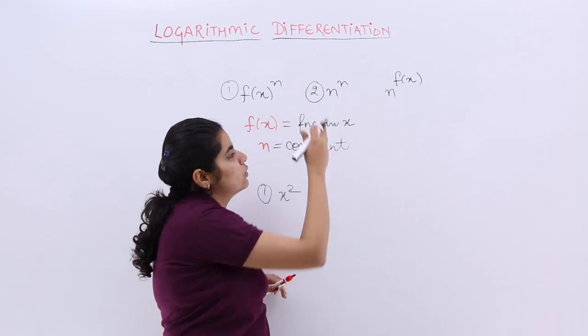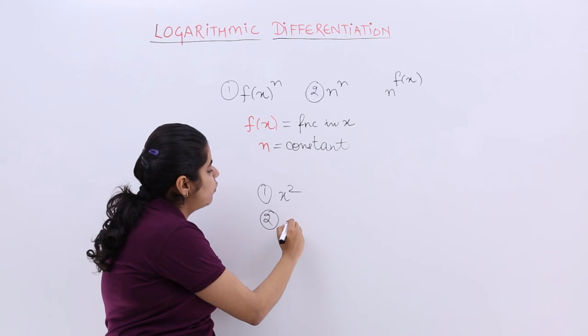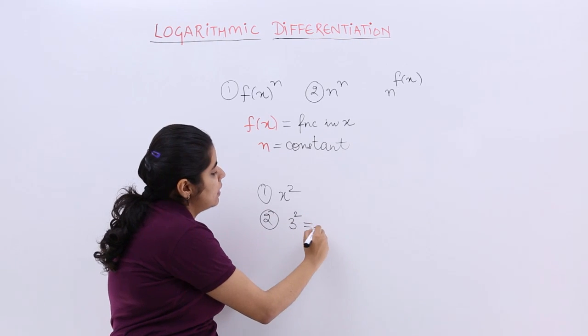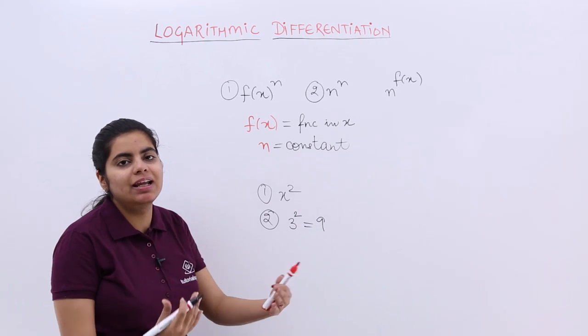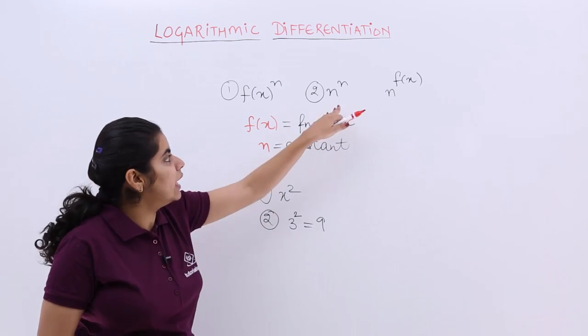Then the next category is n raised to the power n. That means you have already done what do you mean by 3 square? 3 square is 9. How to differentiate 9? 9 is a constant. Differentiation with respect to x is 0. We have done that also.